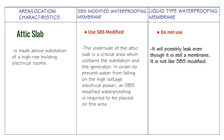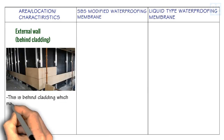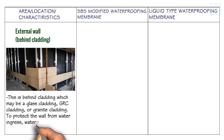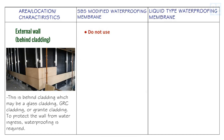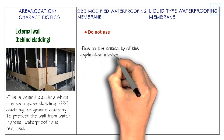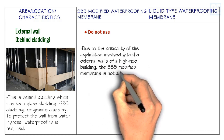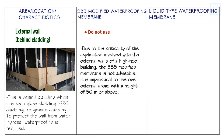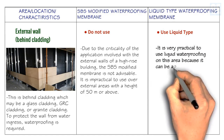For the external wall behind cladding — whether glass cladding, GRC cladding, or granite cladding — waterproofing is required to protect the wall from water ingress. Do not use SBS modified waterproofing here, as it is impractical to apply over external areas at a height of 50 meters or above. Use liquid type waterproofing membrane instead, as it is very practical — it can be applied with a brush or roller.